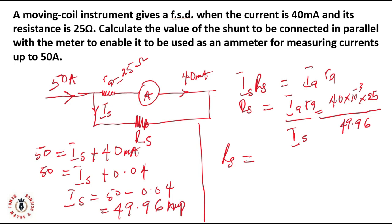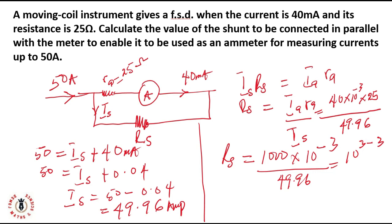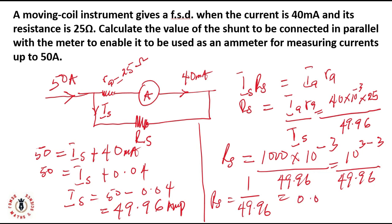Calculating: 40 × 25 = 1000, so the numerator is 1000 × 10⁻³ = 1. Dividing by 49.96: Rs = 1 / 49.96, which gives Rs ≈ 0.020 ohms.